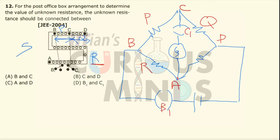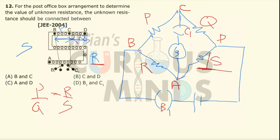If I know these resistances and connect the unknown resistance using the formula P/Q = R/S, we can calculate the value. So the unknown resistance S should be connected between point A and D, which is option number C.